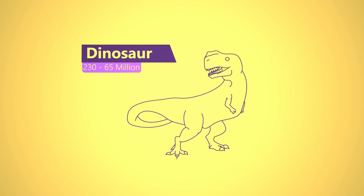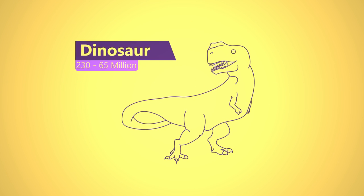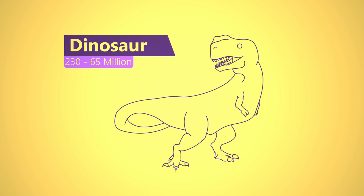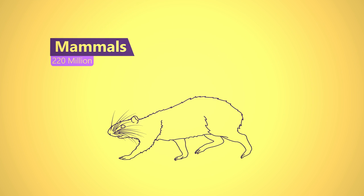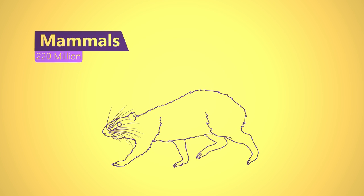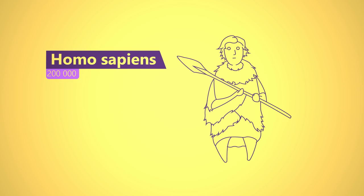Dinosaurs were around between 230 and 65 million years ago. The first mammals started appearing about 220 million years ago, and only in the last 200,000 years did we Homo sapiens appear.